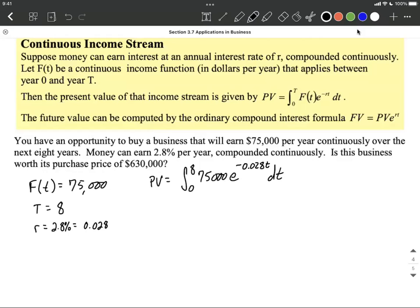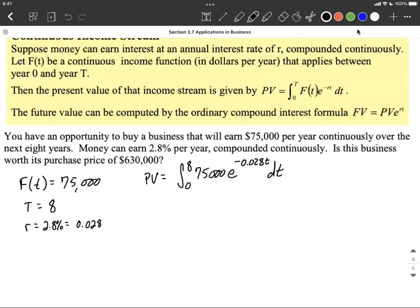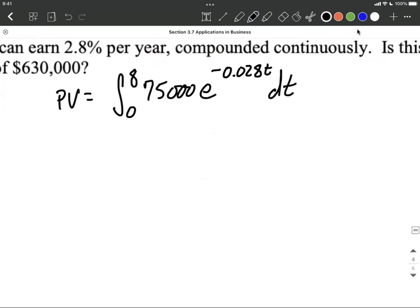So what we want to do is integrate this and figure out what it's worth today. After we've filled everything in, let's rearrange this, make it look a little bit nicer. That 75,000 can come out in front, still integrating between 0 and 8 at this point of E raised to the negative 0.028 T DT.